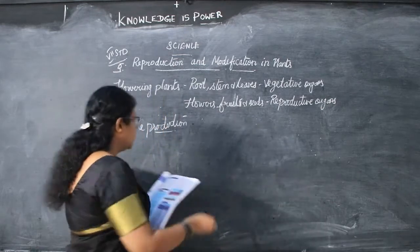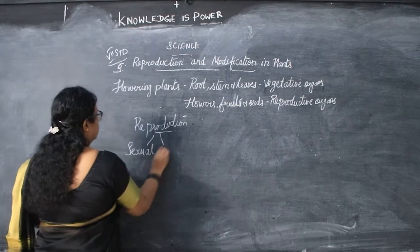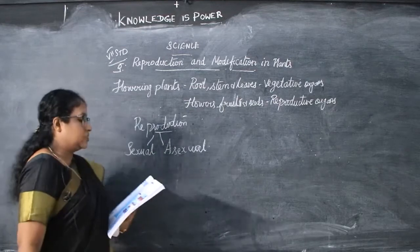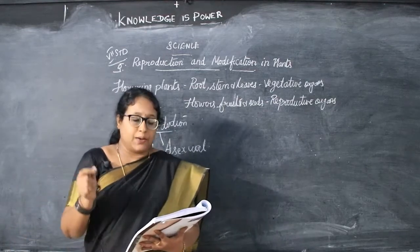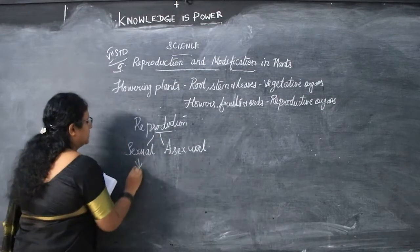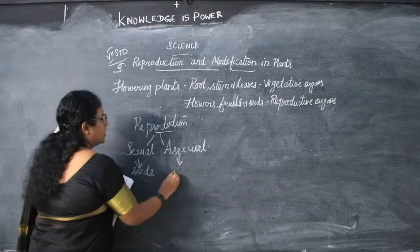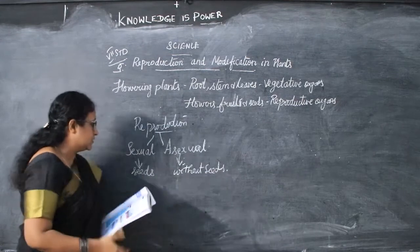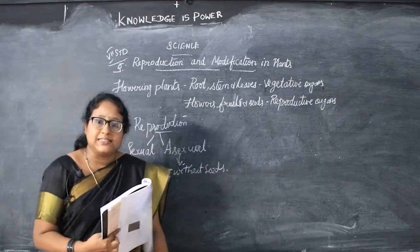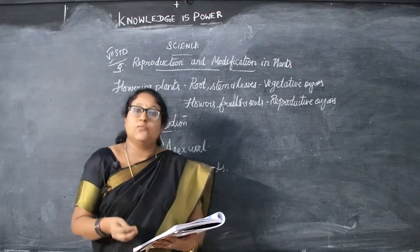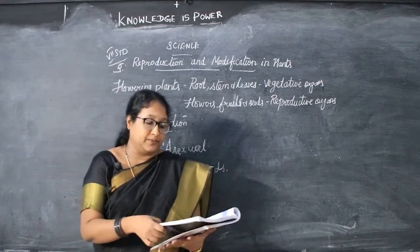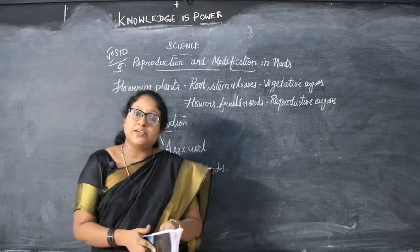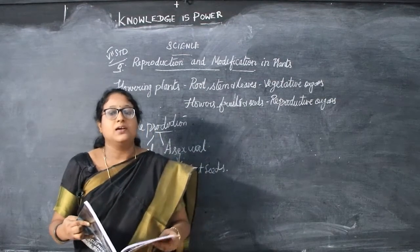There are two types of reproduction: sexual reproduction and asexual reproduction. When plants are produced from seeds, it is called sexual reproduction. Without seeds, it is called asexual reproduction.